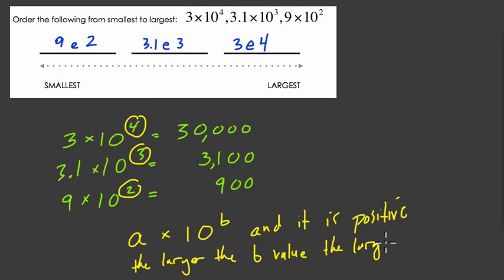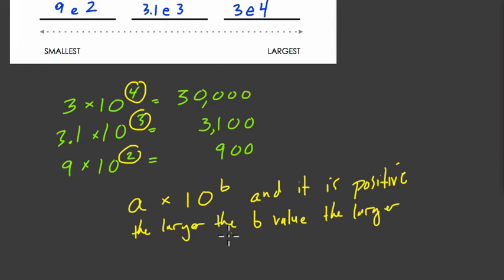Then, the larger the b value, the larger the number. And we could rephrase this by saying that the larger the exponent, the larger the number. So the larger the b value, the larger the number. Or the larger the exponent, the larger the number.